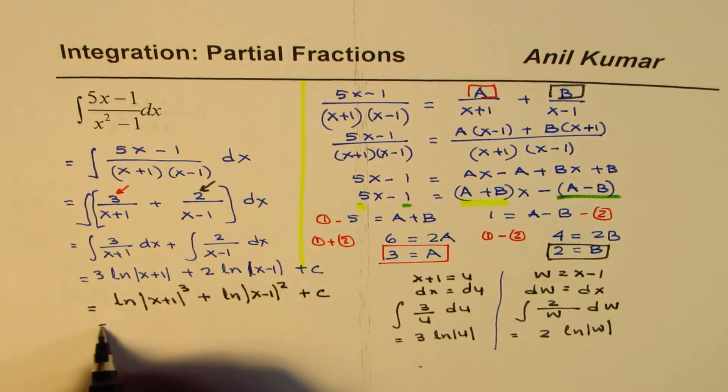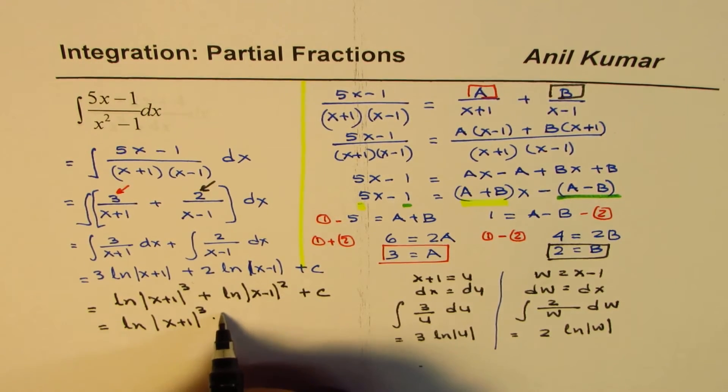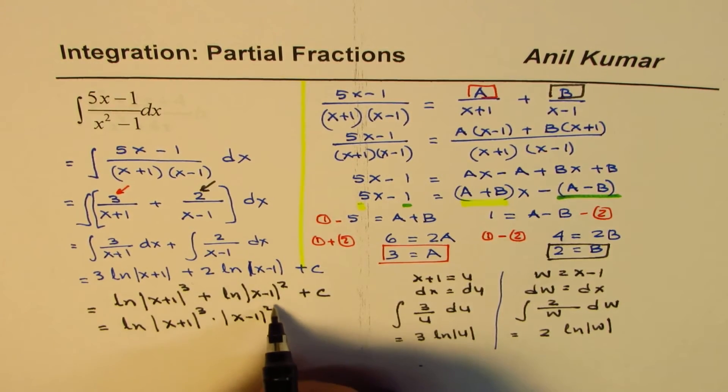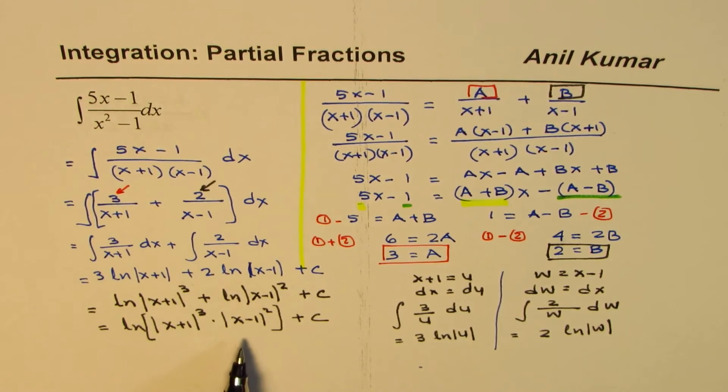So we have ln absolute value of x plus 1 cubed plus ln absolute value of x minus 1 square plus c. And these can be combined. Plus means it's a product. So you could write this as ln x plus 1 cubed times x minus 1 square plus c. So you could simplify and give that as your answer also.